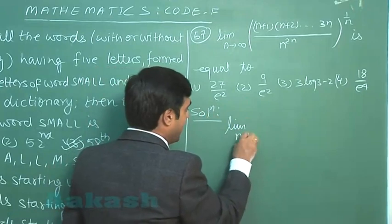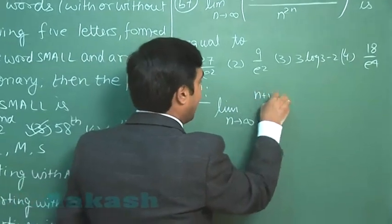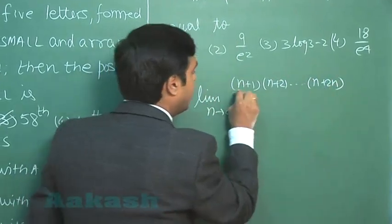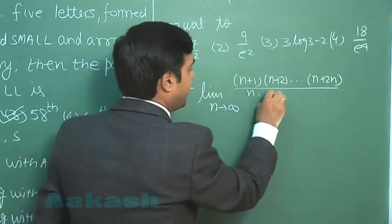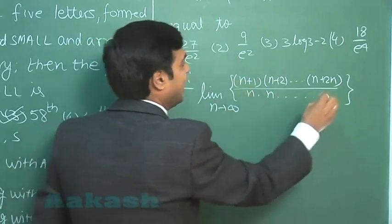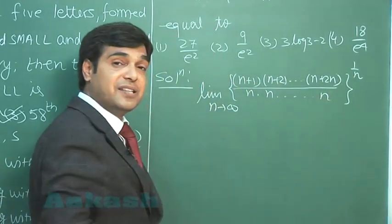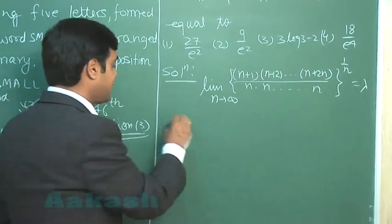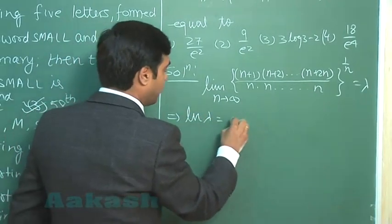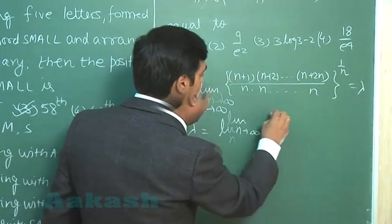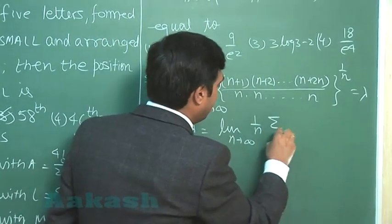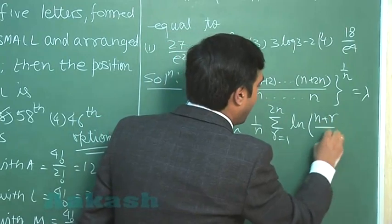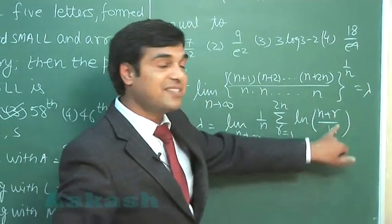It is given limit n approaching to infinity (n+1)(n+2) and so on up to n+2n divided by, we can write denominator as 2n times product raised to the power 1/n. Let us consider the term as lambda. Now taking log, we can see this is log lambda equals limit n approaching to infinity 1/n summation r equals 1 to 2n log (n+r)/n. So we can see here log(1 + r/n) term is available.